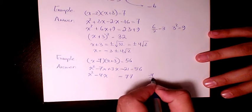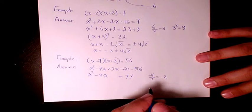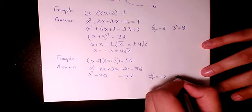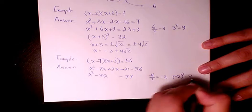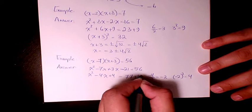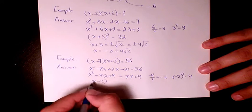Negative 4 divided by 2 is negative 2. Negative 2 squared is going to be 4. So plus 4, plus 4 will be x minus 2 to the power of 2.